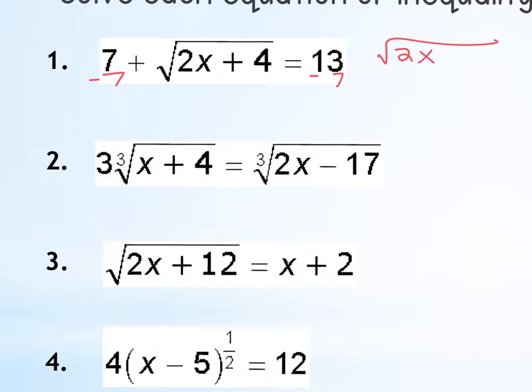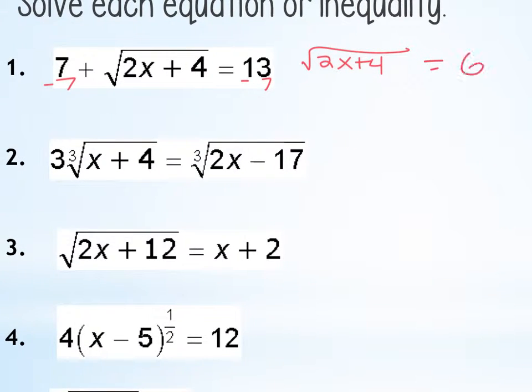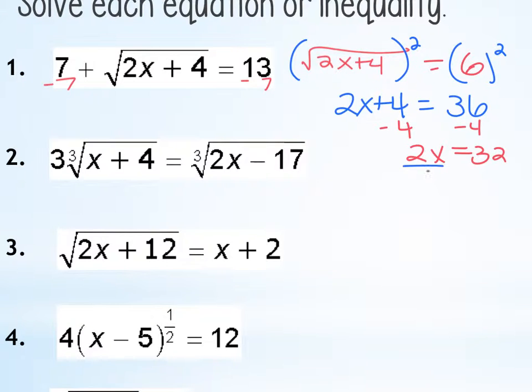So I'm going to subtract the 7 from both sides. And I get the square root of 2x plus 4 equals 6. And then I've got the square root isolated, so now I can raise it to the power of 2, canceling out the square root on the left-hand side. When you square the square root, it cancels out, and then 6 squared is 36. Then what? Subtract the 4, x equals 32, and divide by 2. x equals 16.